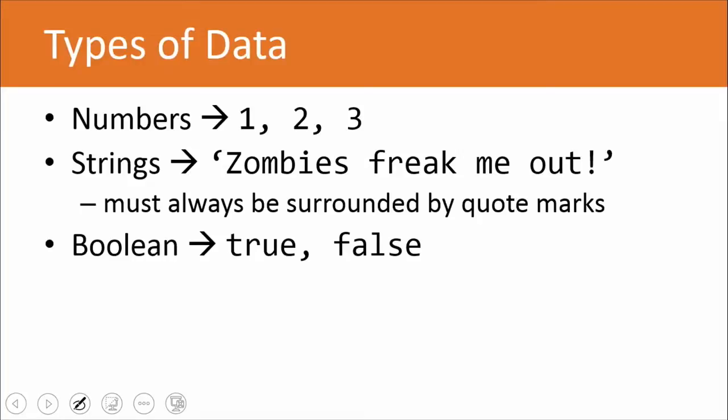Lastly, I want to talk about a couple of different data types or types of data. You can store numbers inside of variables. So 1, 2, 3, 4, 5, and so on. You can store strings of characters. Like, zombies freak me out can be stored in a variable. The one thing with strings is that they have to always be surrounded by quote marks. So if I have var words and I can say, I like stuff.